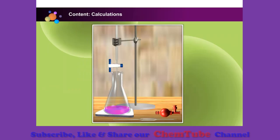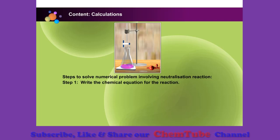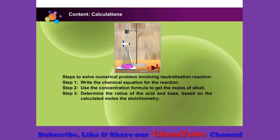Acid base titration is used to find the concentration of an acid or a base. To solve numerical problems involving neutralisation, you must be able to write chemical equations for the reactions. Then, work out the moles of the alkali using the concentration formula. Next is to look at the ratios of the acid and base in the original equation, the stoichiometry.